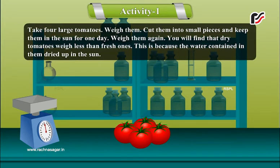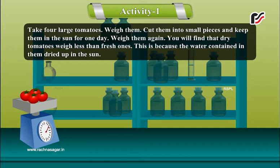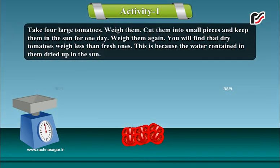Take four large tomatoes, weigh them, cut them into small pieces and keep them in the sun for one day.